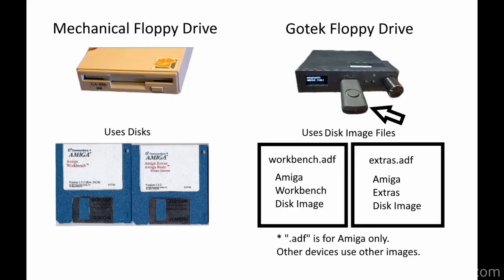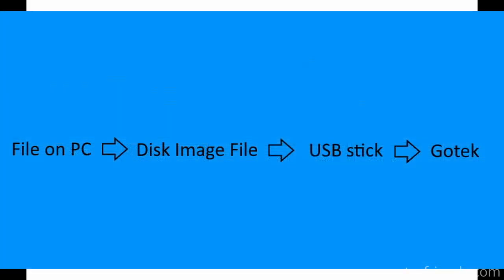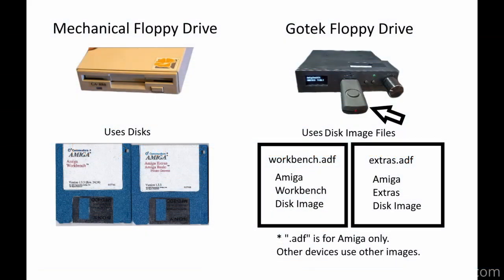Think of the GoTek as a direct replacement for your old floppy drive — which it is — and think of the files that you put on the thumb drive as disks. So to transfer files from your PC to your old device, you need to copy those files to a disk image and then put that disk image on the thumb drive. This is the same as having a blank disk to save to. I will also demonstrate creating this blank disk image in this tutorial, so stay tuned.